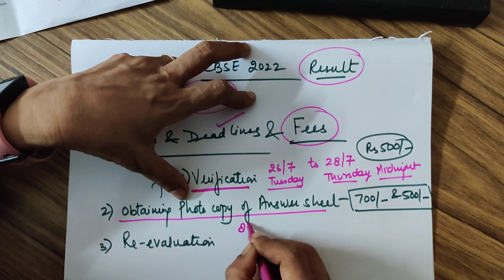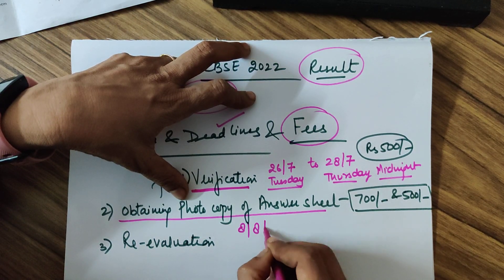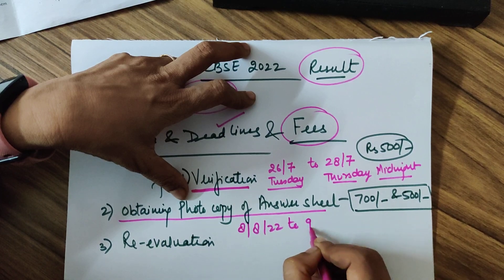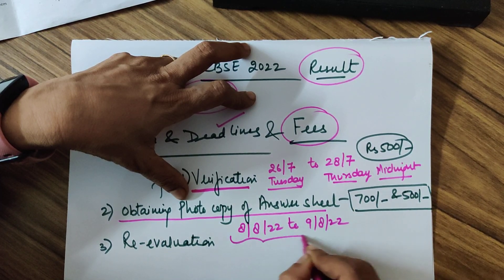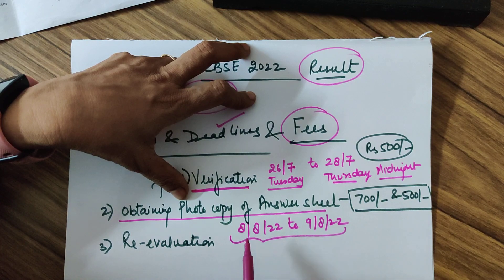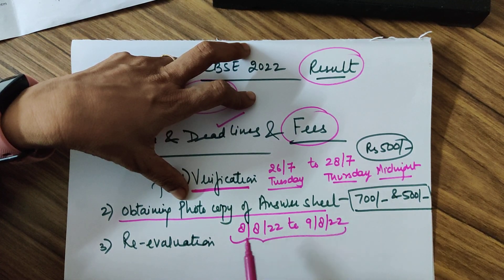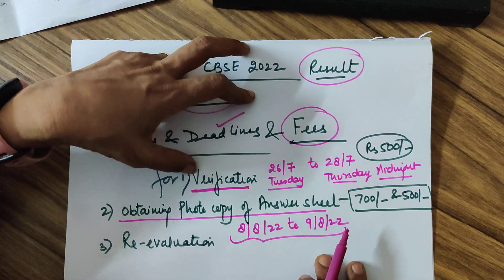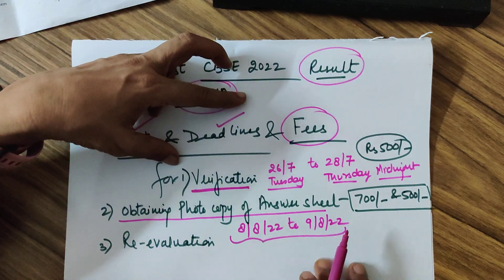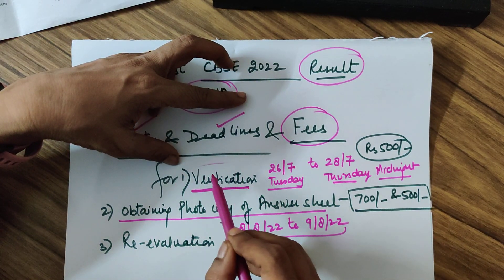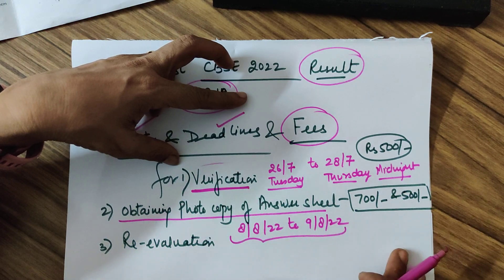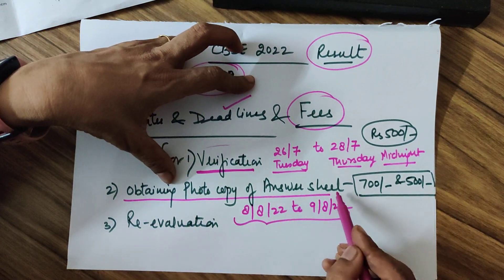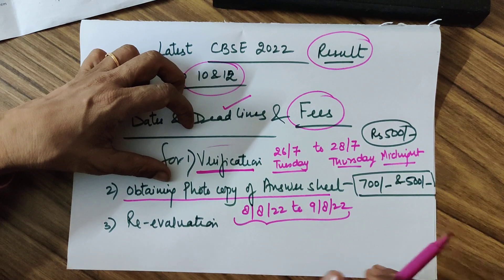The dates on which photocopy can be applied for is 8th August to 9th August — it is a very small window. Only one day: from 8th August to midnight of 9th August. You have to take a decision whether you want the photocopy or not. This step comes only if you are dissatisfied with the verification result.